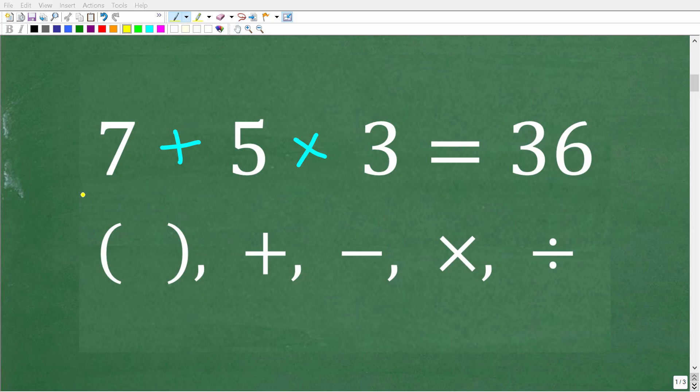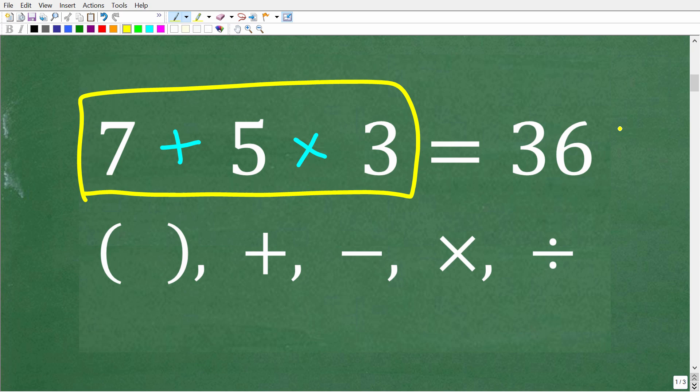Okay, so why is 7 plus 5 times 3 not equal to 36? And again, a lot of people are looking at this work and saying, come on, Mr. UT Mathman. And 7 plus 5 is 12 and 12 times 3 is 36. Well, that is all logical. Unfortunately, we are looking at this problem wrong. Now, what am I talking about? Well, I'm talking about something called the order of operations.